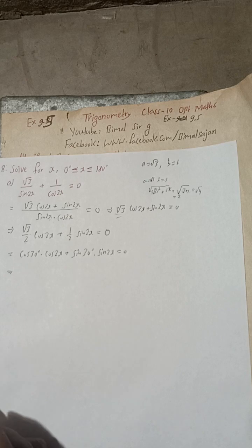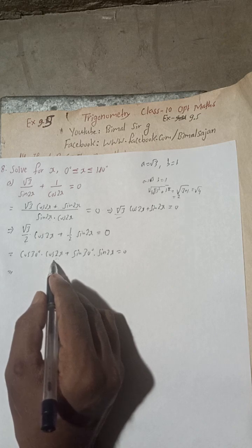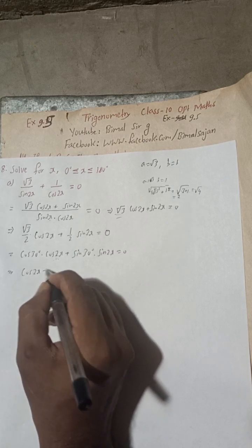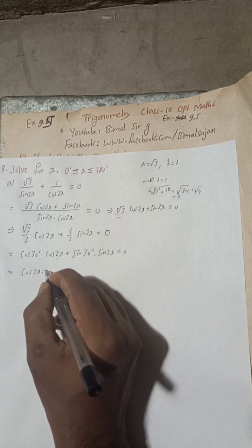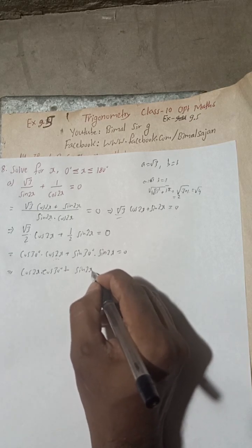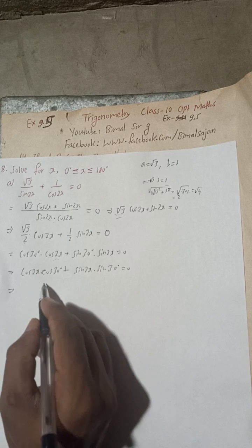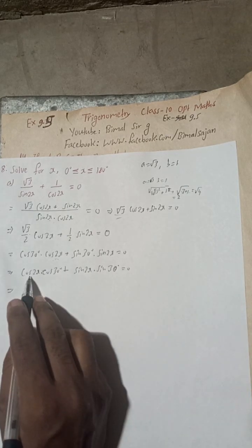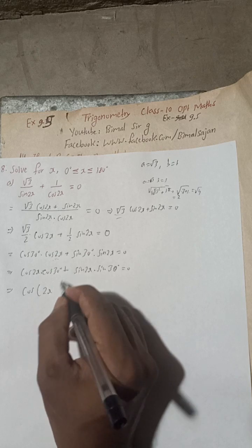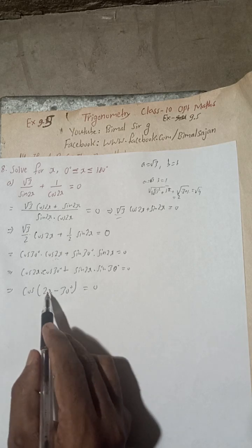We can rearrange and write this as cos 2x into cos 30 degrees plus sin 2x into sin 30 degrees equals 0, which is the formula for cos(2x minus 30 degrees) equals 0.